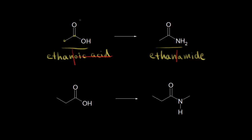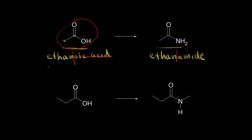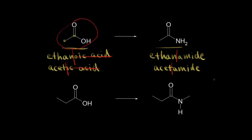Most people don't call this ethanoic acid — most people call it acetic acid. If we think about naming the amide derived from acetic acid, we drop the 'ic acid' ending and add 'amide', so we get acetamide. The rule is the same: drop the ending and add amide.